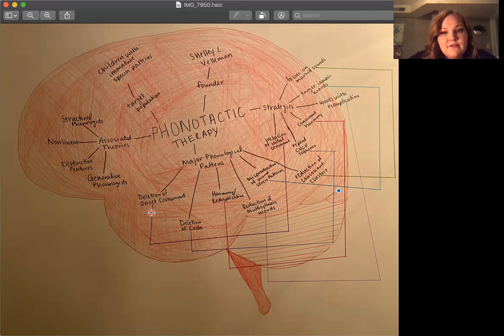First we have deletion of the onset consonants. If you follow this line, the recommended strategy is to target the inclusion of initial consonants and give the child positive feedback for any CV shape, regardless of the accuracy in the initial consonant.